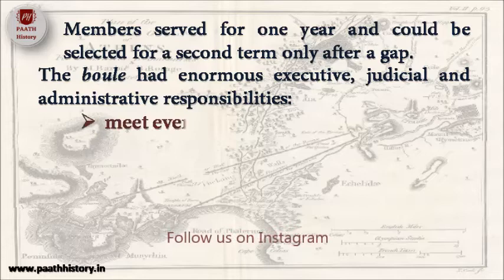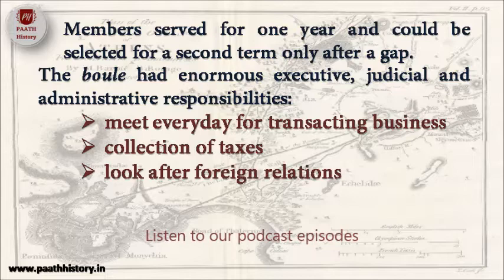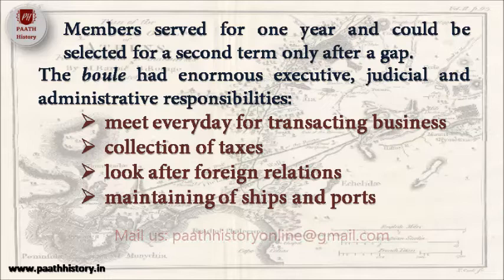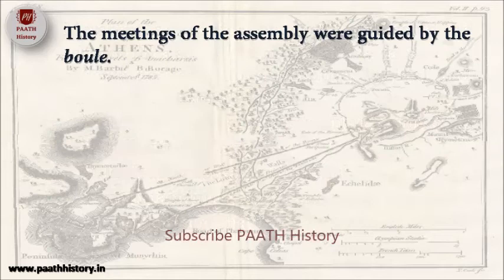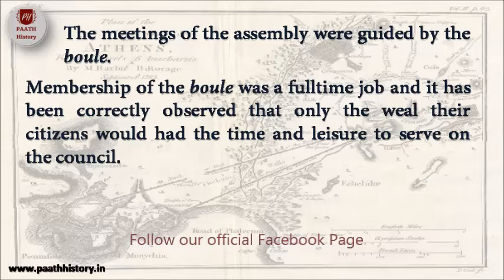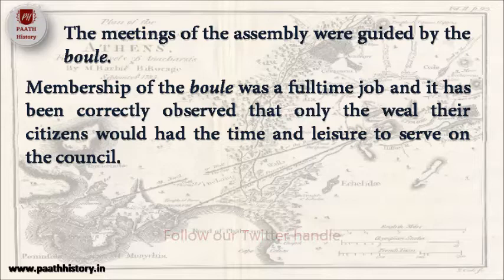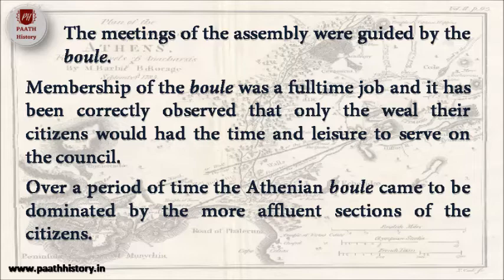The Bole met every day for transacting business: collection of taxes, looking after foreign relations, maintaining ships and ports, and regulation of trade. The meetings of the assembly were guided by the Bole. Membership of the Bole was a full-time job, and it has been correctly observed that only the wealthier citizens would have the time and leisure to serve on the council. Over a period of time, the Athenian Bole came to be dominated by the more affluent sections of the citizens.